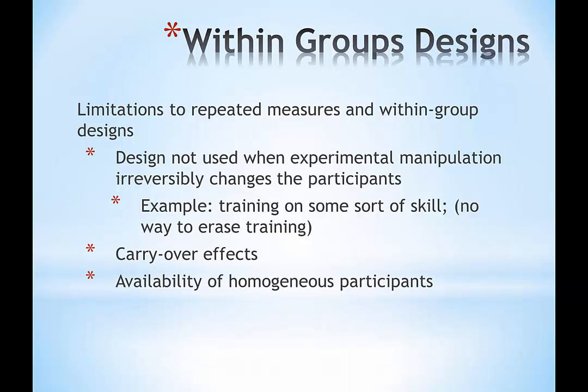We've also been talking about carryover effects from one condition to the next. And lastly, we've got to have the availability of homogeneous participants—in that prior GPA example, I've got to have that block of high-GPA and low-GPA participants available before I start the real part of the experimental manipulation.